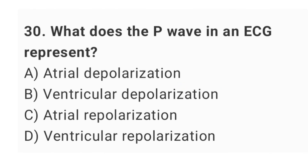Question number 30: What does the P wave on an ECG represent? The right answer is option A: atrial depolarization.